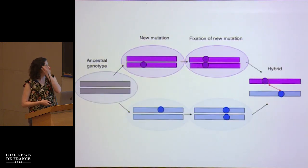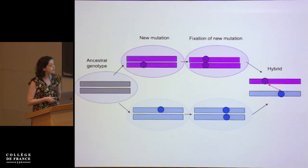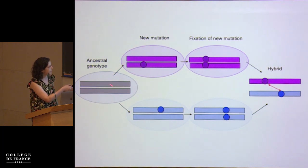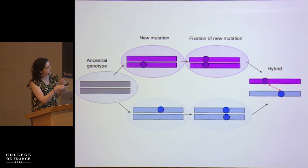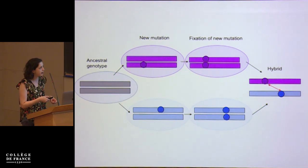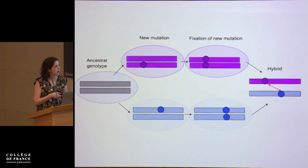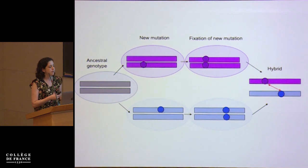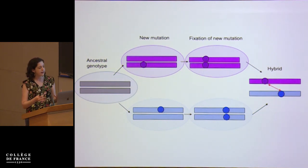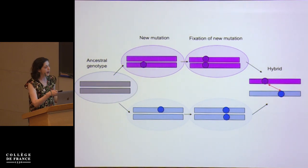A lot of our work has focused on trying to understand the role of hybrid incompatibilities in this process. The basic idea, independently proposed by Dobzhansky and Muller, is that you have an ancestral population that subdivides into daughter populations, which accumulate and fix new mutations. These mutations will be neutral or advantageous within that genome, but if these species come back together and hybridize, you can have negative interactions between mutations that haven't been tested together before. This model fits well with observations about reduced hybrid viability and fertility mapped in lab organisms, and I've been very interested in bringing this to natural hybrid populations.